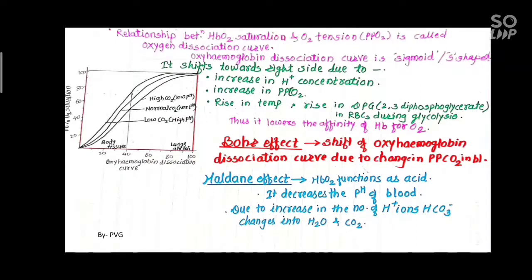This is the Oxygen-Hemoglobin dissociation curve, or simply the Oxy-Hemoglobin dissociation curve. As seen in the diagram, this curve shifts towards the right side due to: increase in hydrogen ion concentration, increase in partial pressure of carbon dioxide, and rise in temperature.